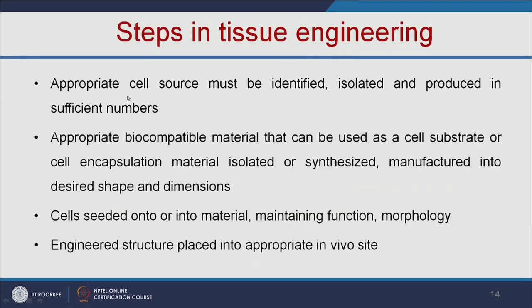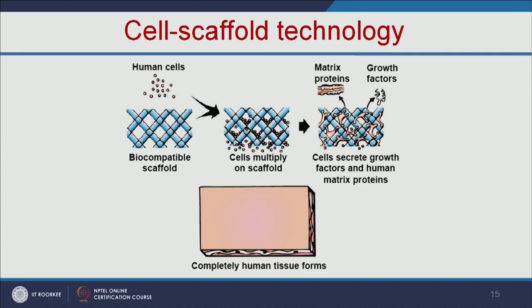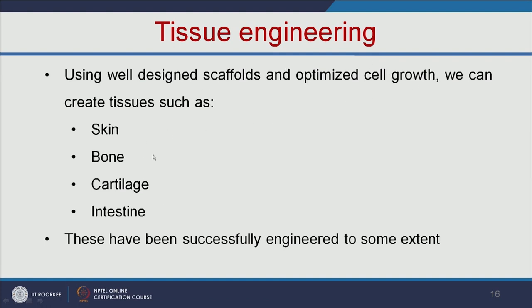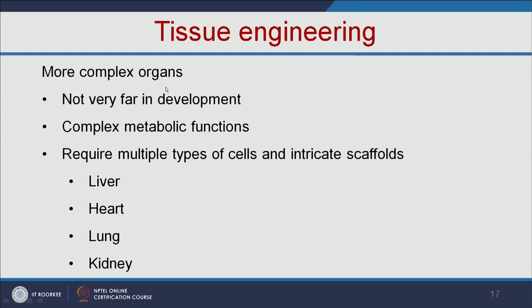The steps in tissue engineering are: select a suitable cell source, select a suitable scaffold, add the cells on the scaffold and grow them, then transplant to the human body. Cells are added to a biocompatible scaffold, the cells multiply, and growth factors or matrix proteins are added. Cells then secrete growth factors and human matrix proteins and become a complete human tissue. Tissues such as skin, bone, and cartilage have already been successfully engineered. Complex organs like liver, heart, and lung are still under research because they have complex metabolic functions and require multiple types of cells.